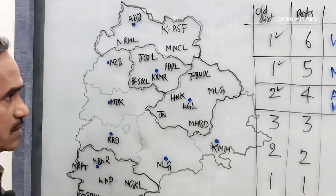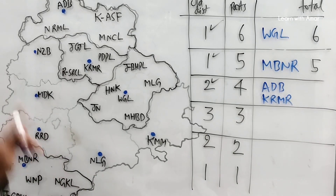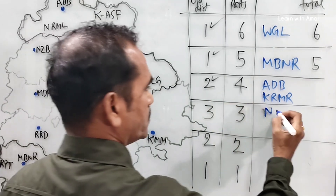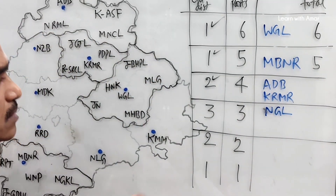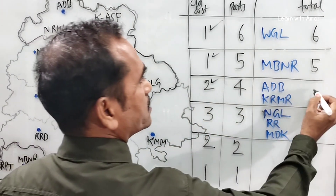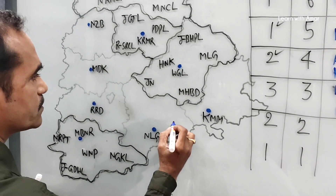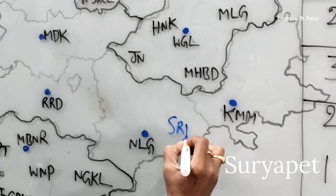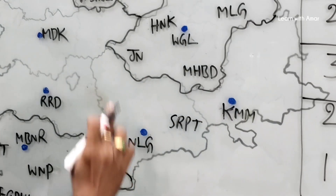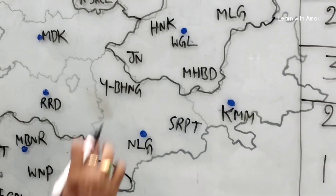Now let us look at three parts. How many districts became three parts? Three districts: Nalagonda, Rangareddy, and Medak. Looking at Nalagonda: it has Nalagonda itself, Suryapet, and Yadadri Bhuvanagiri. We try to complete the district outline for Nalagonda.